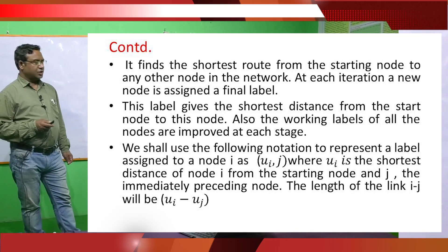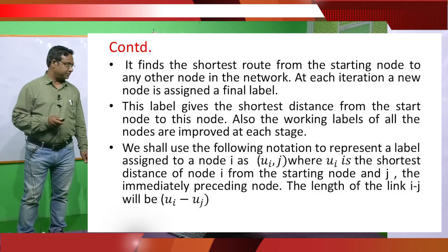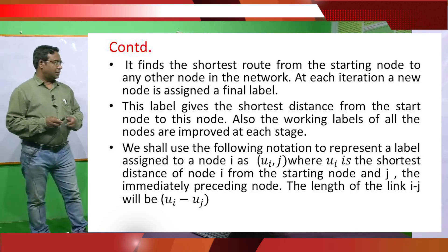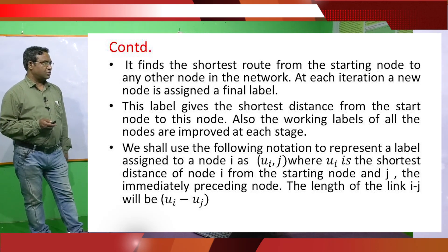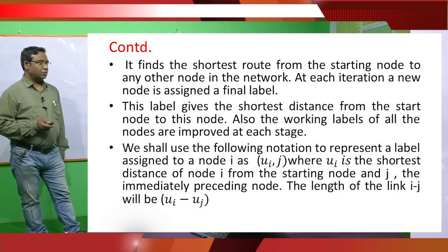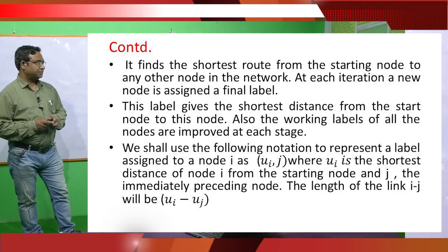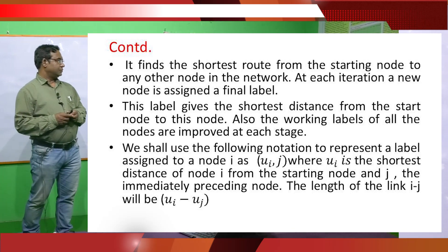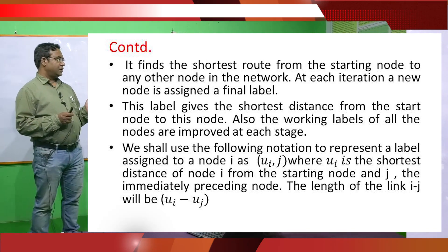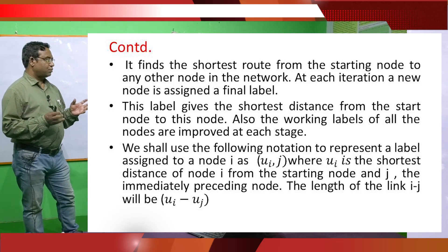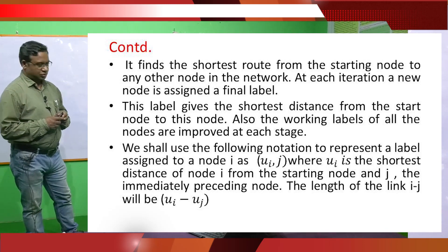It finds the shortest route from the starting node to any other node in the network. At each iteration, a new node is assigned a final label. This label gives the shortest distance from the start node to this node. Also, the working labels of all the nodes are improved at this stage. So, in the shortest route problem, we can find the shortest distance for every node from the starting node.